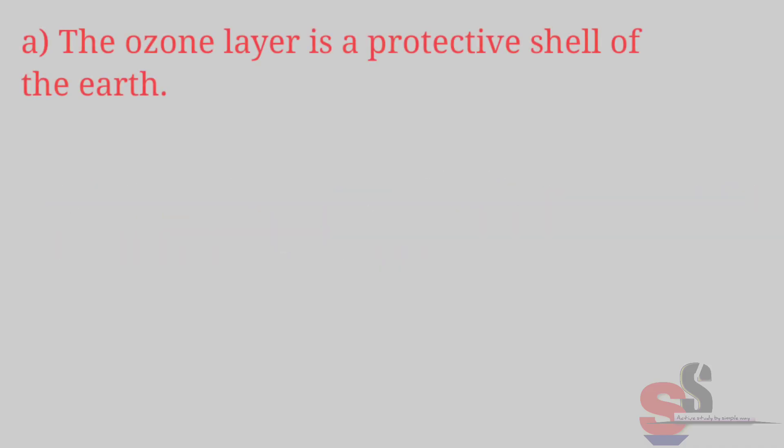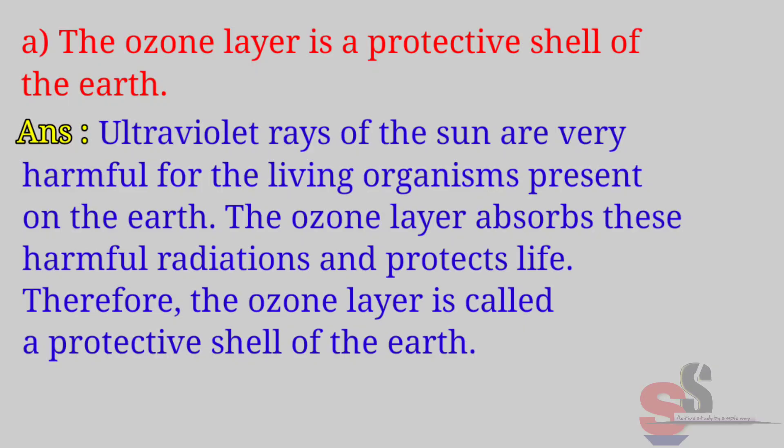Question 2: Why is it said that A. The ozone layer is a protective shell of the earth? Answer: Ultraviolet rays of the sun are very harmful for the living organisms present on the earth. The ozone layer absorbs these harmful radiations and protects life. Therefore, the ozone layer is called a protective shell of the earth.